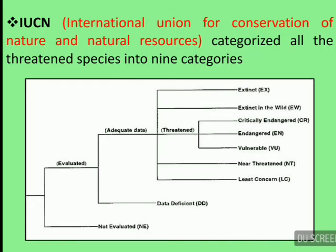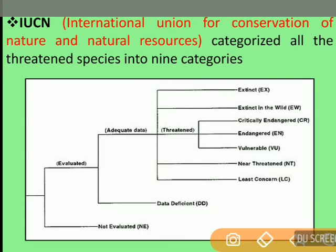IUCN, that is International Union for Conservation of Nature and Natural Resources, categorized all the threatened species into 9 categories. These are: Extinct (EX), Extinct in the Wild (EW), Critically Endangered (CR), Endangered (EN), Vulnerable (VU), Near Threatened (NT), Least Concerned (LC), Data Deficient (DD), and Not Evaluated (NE).